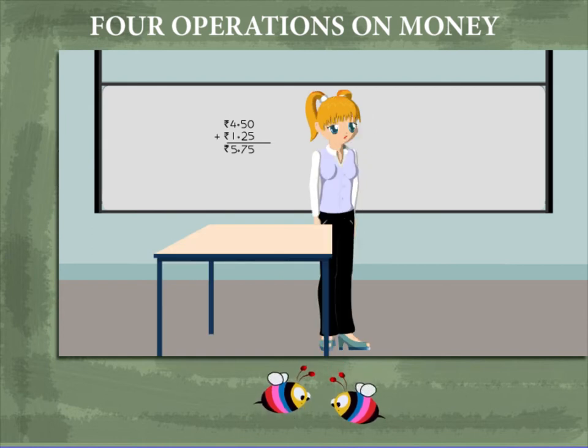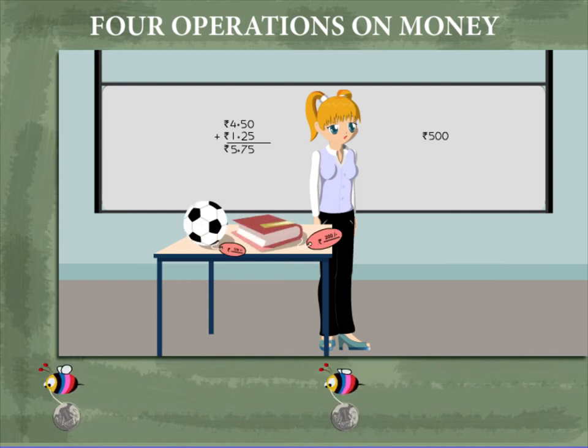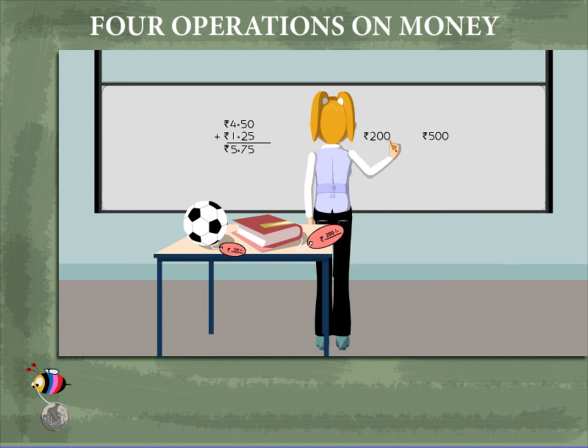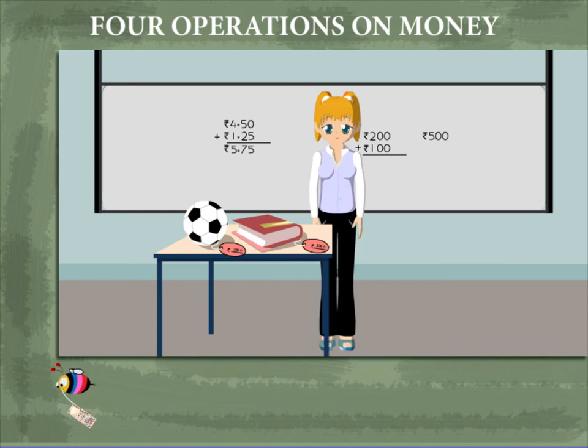Nancy ma'am now has a 500 rupee note. She buys a football and a book. She adds rupees 200 cost of the book and rupees 100 for the football.